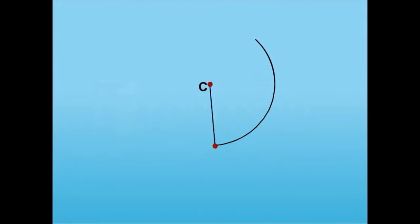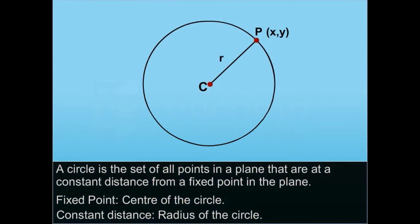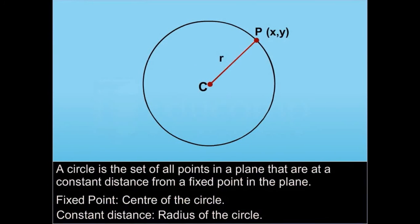A circle is the set of all points in a plane that are at a constant distance from a fixed point in the plane. The fixed point is the center of the circle and the constant distance is the radius of the circle.